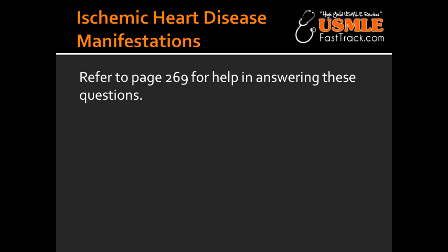What is Prinzmetal's variant angina? Prinzmetal's variant angina is chest pain that occurs at rest, secondary to coronary artery spasm. The ECG changes observed in Prinzmetal's angina show ST elevation.